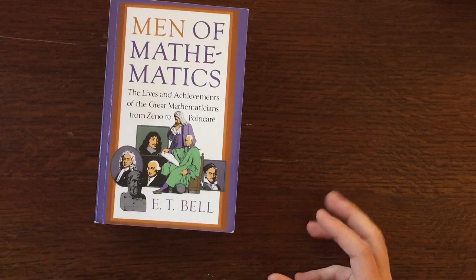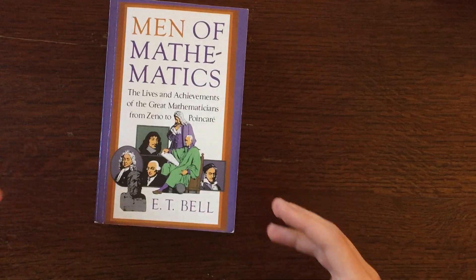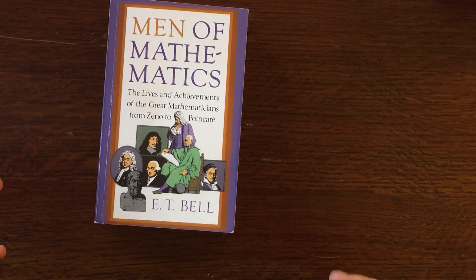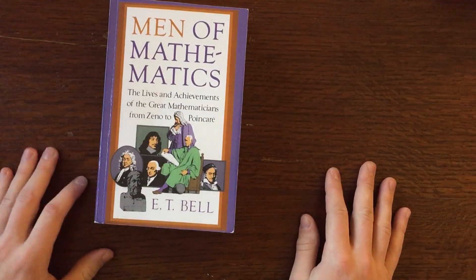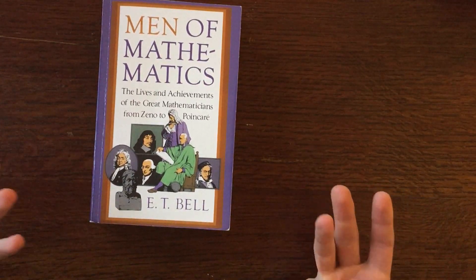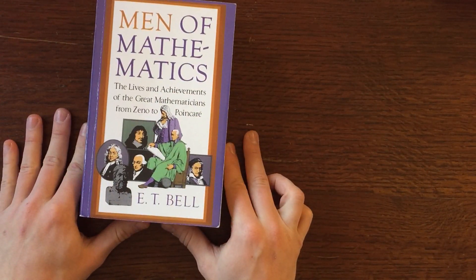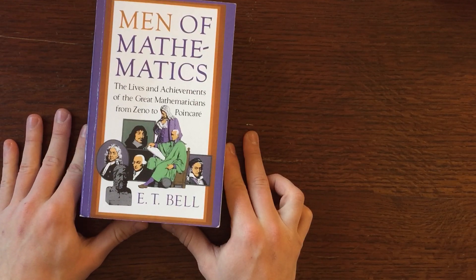Most of the time in your math classes, you're learning mathematics and they throw around all the names like Gauss and Euler and whoever else it might be. But you don't really know anything about those people themselves, although you hear their names very often, and this book here pretty much answers that question.